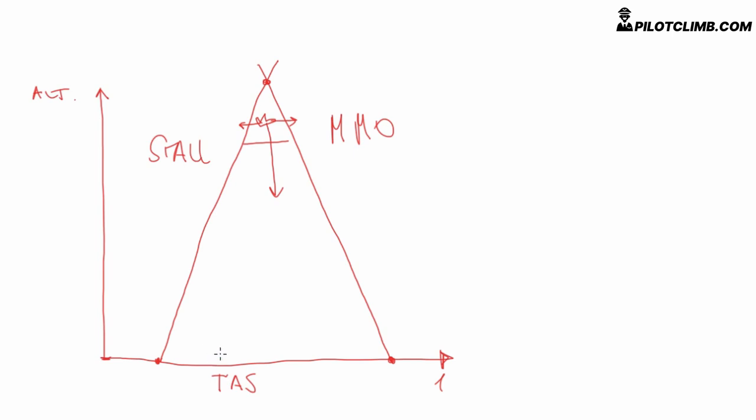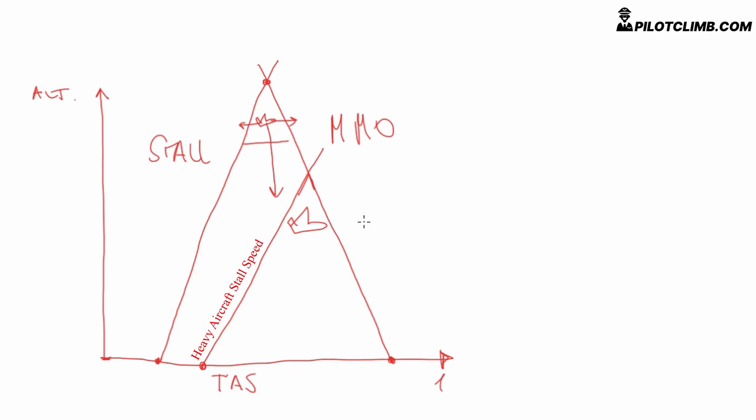Now let's talk about what happens to the coffin corner with weight. The heavier the aircraft, the higher will be the stall speed. So looking at the graph, if we draw the stall speed for a heavier aircraft, since the stall speed will be higher, the coffin corner will be reached earlier.